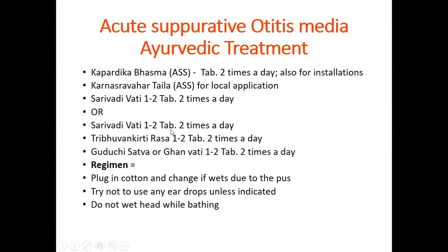Fourth prescription: Sarivadivati blood purifier two tablets two times a day, Tribhuvankirti Rasa two tablets two times a day to control upper respiratory tract infection, and Guduchi Ghanavati or Guduchi Sattva two tablets two times a day to boost immunity and to avoid recurrence.